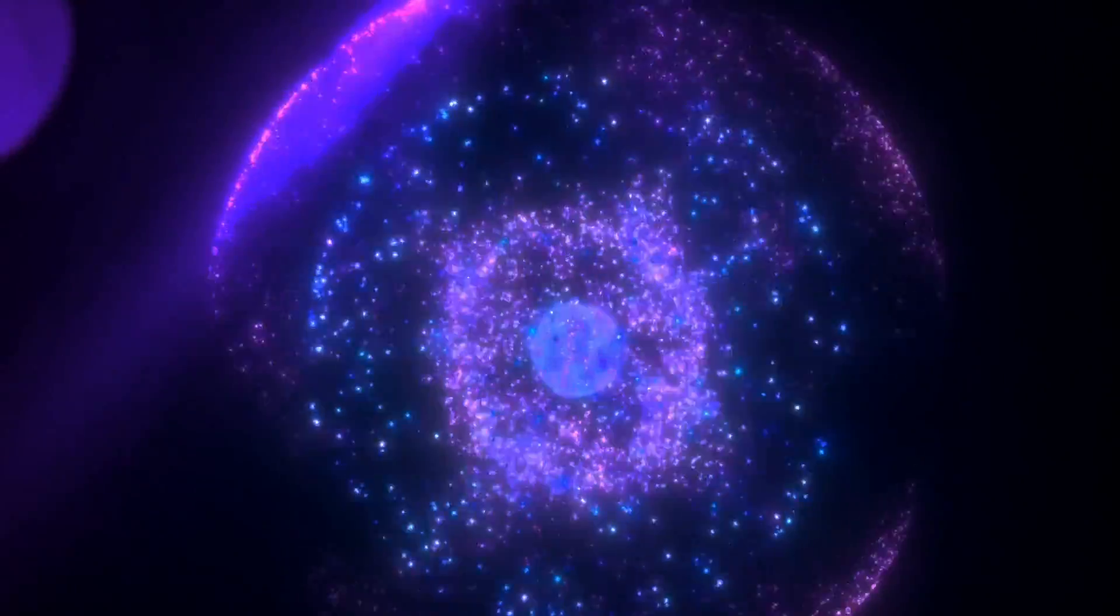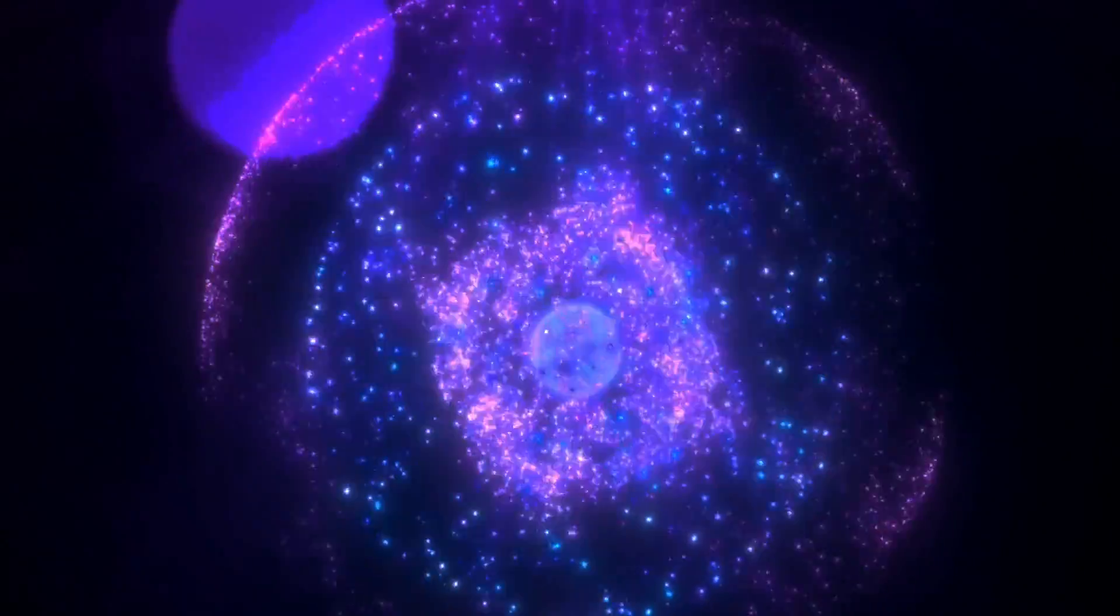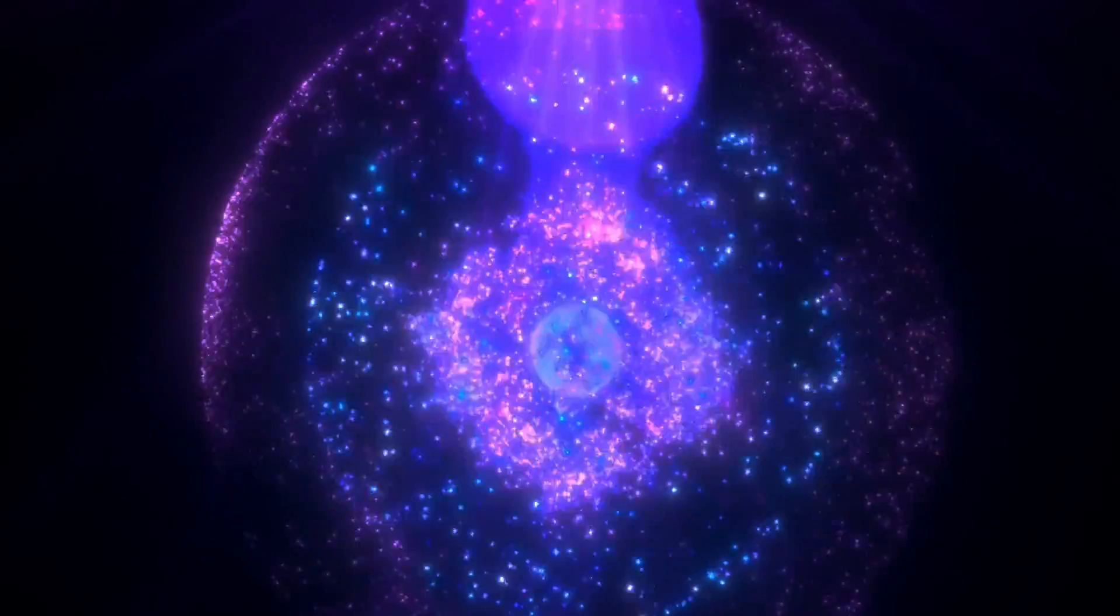On the other hand, the Schwarzschild radius is a specific measure of the distance between the black hole's center, also known as the singularity, and its event horizon. It represents the radius of a sphere that, if all the mass of the black hole were to be compressed within it, would result in the formation of an event horizon. Critics often conflate these terms, leading to misunderstandings about the nature of black holes.